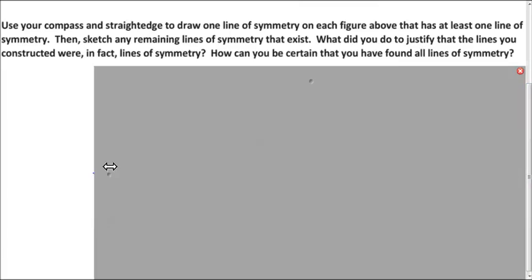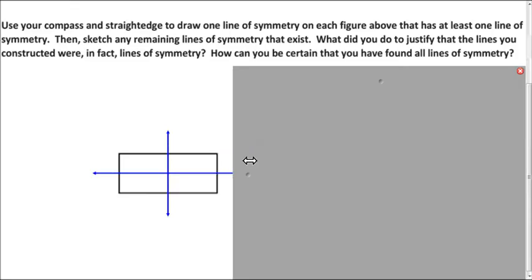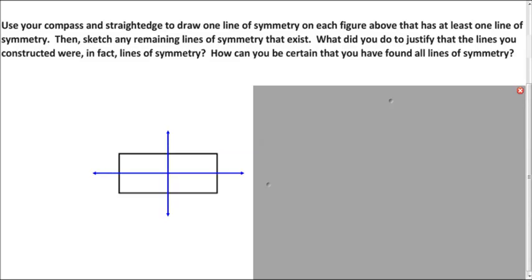So, the rectangle has two lines of symmetry. And how can we verify that those are lines of symmetry? We could do some measurements. Or you could draw on a piece of paper and fold it. Make sure that it lays on top of itself. Now, how can we be sure that we don't have any more lines of symmetry? One way to do this is through exhausting all possibilities. What do I mean by that?